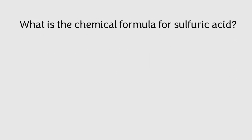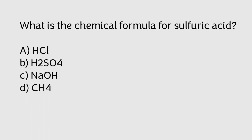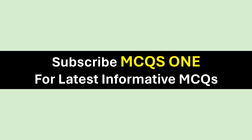What is the chemical formula for sulfuric acid: HCl, H2SO4, NaOH, or CH4? The correct answer is option B — H2SO4. Thanks for watching — subscribe to MCQ1 for the latest informative MCQs.